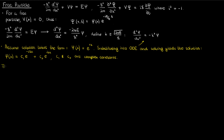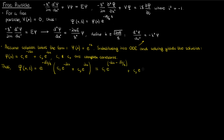This means that our general wave function capital Psi — which is the product of small psi and the exponential in time term — is given by the following. If we then distribute out the time exponential, this is what we get.